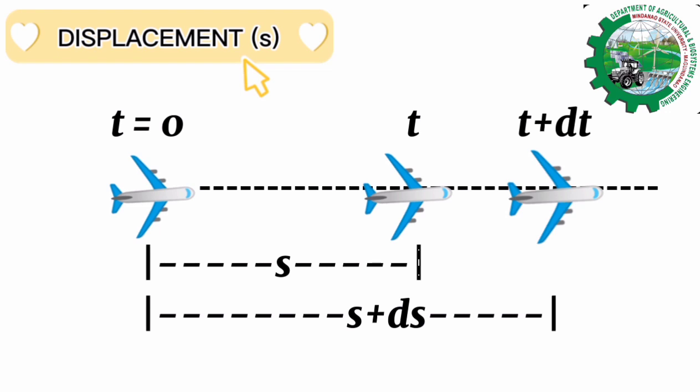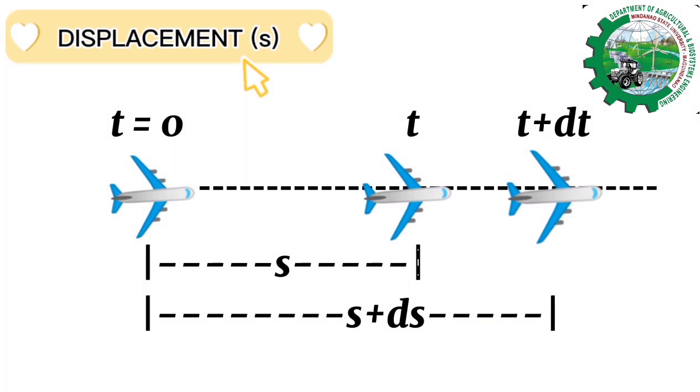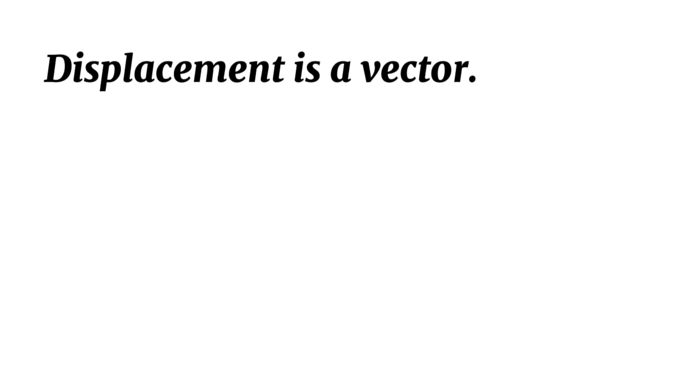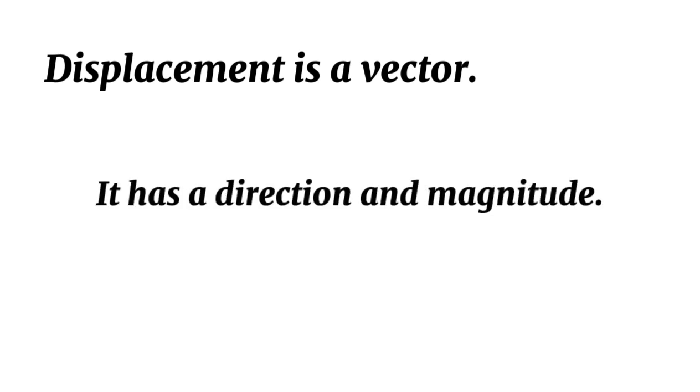Now before we can proceed in solving problems, let us go back first with the displacement. Displacement is defined to be the change in position of an object. It can be defined mathematically with the following equation: displacement equals delta x equals x sub f minus x sub 0. x sub f refers to the value of the final position, x sub 0 refers to the value of the initial position, and delta x is the symbol used to represent displacement. Displacement is a vector. This means it has a direction as well as a magnitude and is represented visually as an arrow that points from the initial position to the final position.